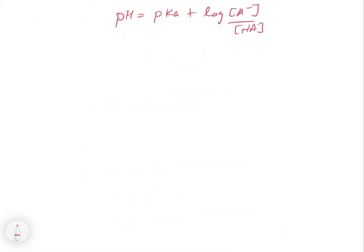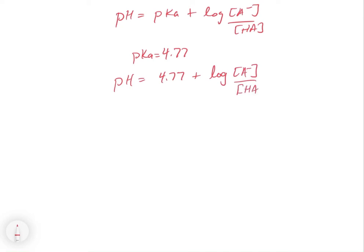Let's talk about some consequences of the Henderson-Hasselbalch equation. Take acetic acid as an example. The pKa for acetic acid is around 4.7 — specifically, taking the negative log of Ka, which is about 1.8 times 10 to the minus 5, gives a pKa of about 4.77. So for acetic acid, the pH will be 4.77 plus the log of A minus over HA, meaning the pH range is going to be close to the 4.7 area, varying as we change the ratio of A minus to HA.